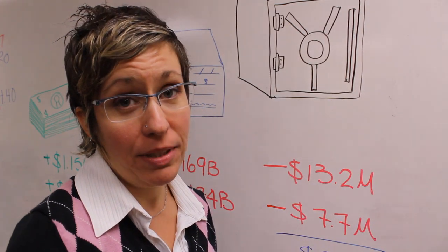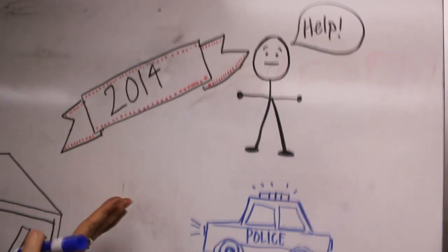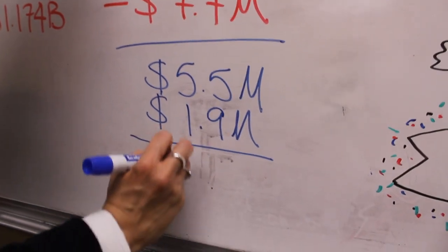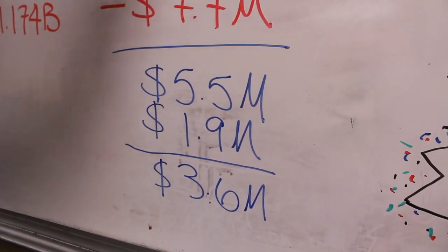Now hang on, it gets a little more complicated. $1.9 million must be put back into next year's budget. So $5.5 million minus $1.9 million equals $3.6 million